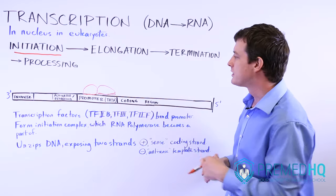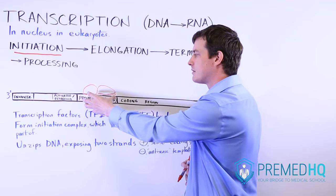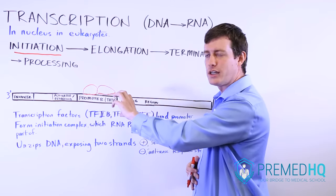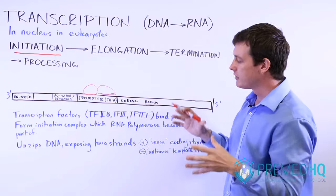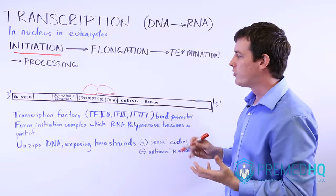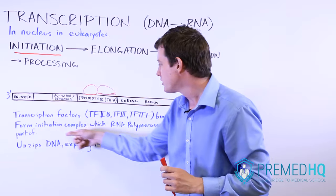And what these do is they bind the promoter. They recognize the promoter region of the double-stranded DNA and they bind it. And as they bind it, several of them gather together and they form what's known as an initiation complex.